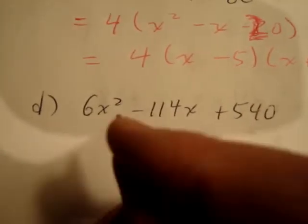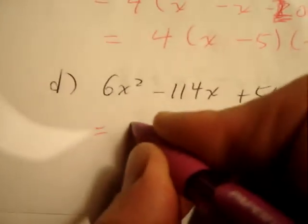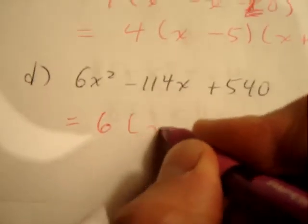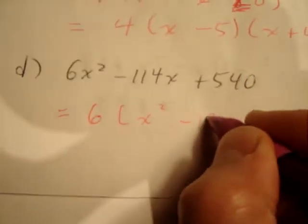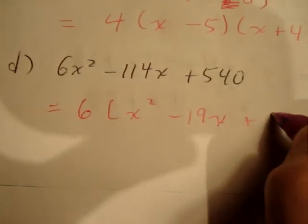Last but certainly not least is this guy right here. Pretty big digits. We factor out the 6, and we're left with x² - 19x + 90.